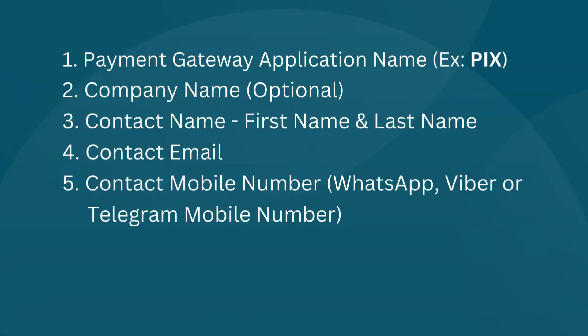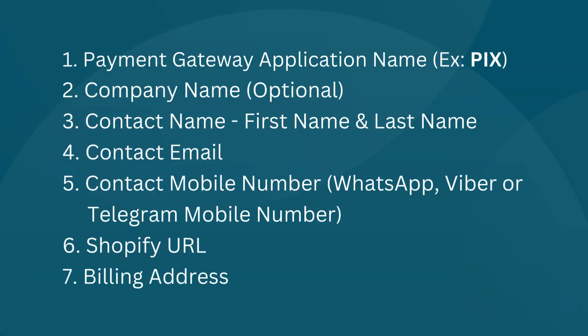The required details are: 1. Payment gateway application name, for example PIX. 2. Company name (optional). 3. Contact name (first name and last name). 4. Contact email. 5. Contact mobile number (WhatsApp, Viber, or Telegram mobile number). 6. Shopify URL. 7. Billing address.